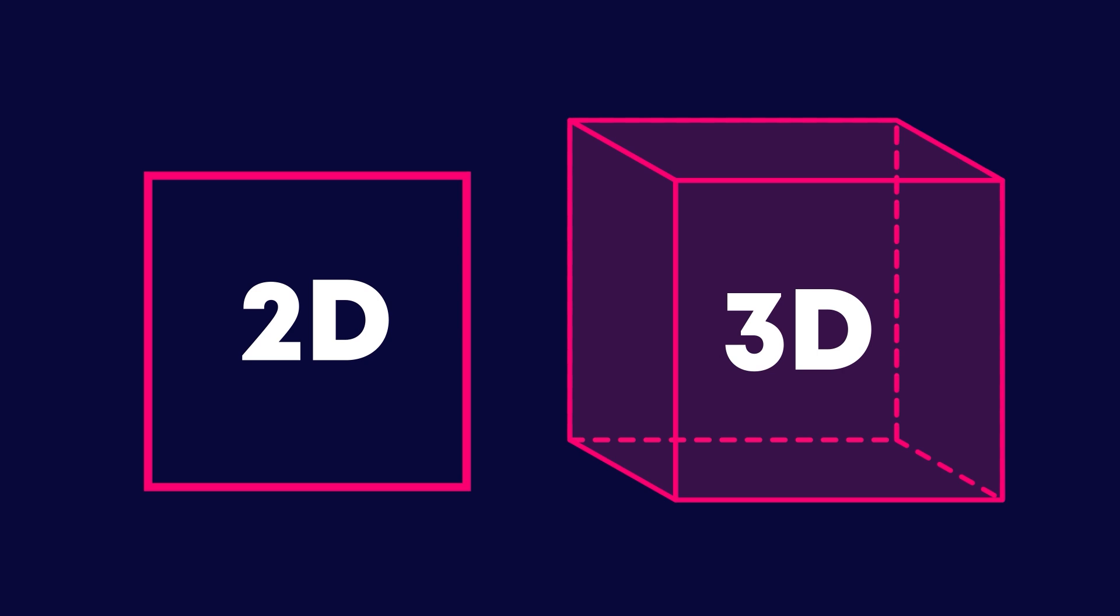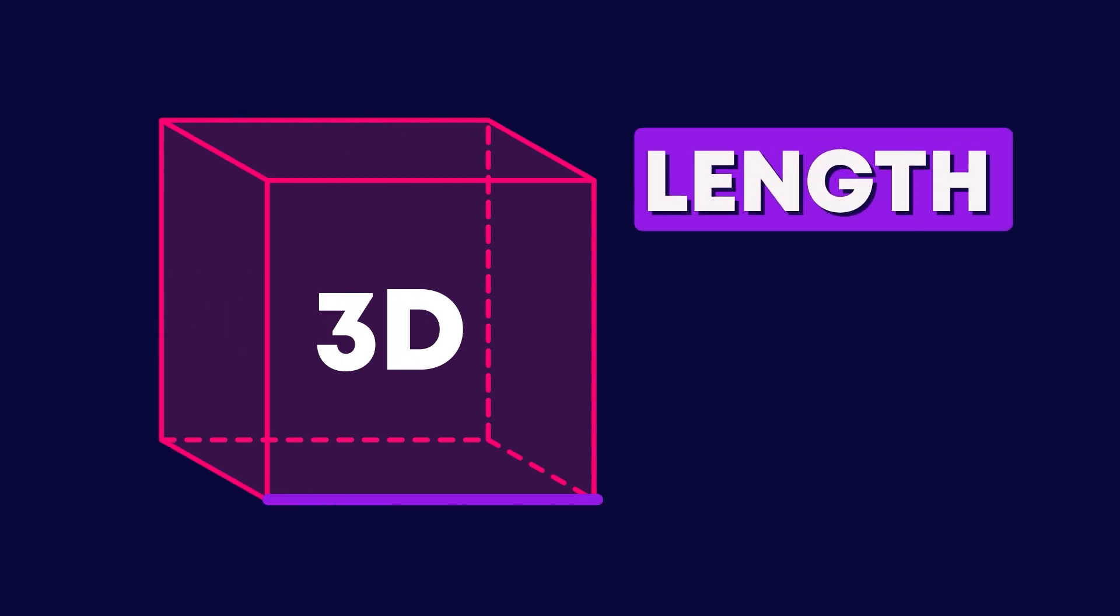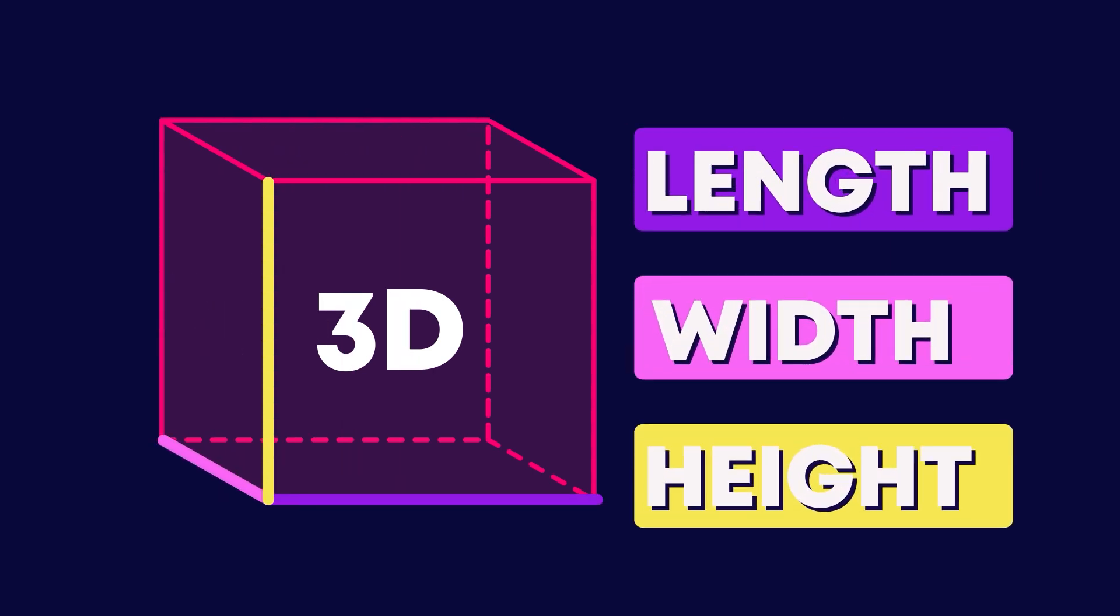Unlike 2D shapes, which are flat, 3D shapes have three dimensions: length, width and height or depth.